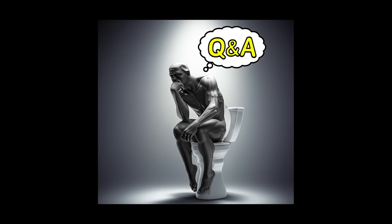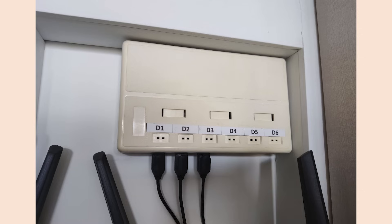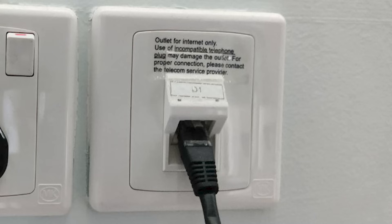The first question — surprisingly I didn't expect a lot of you to ask this, so I just skimmed through it in my previous video. The question is: how do I know which LAN port goes to which room in my HDB? In my previous video I referred to that as D1, D2, D3 in the DB box to simplify terms for lay people. That thing in the DB box — I'll put a picture here — is also known as a patch panel. It has D1, D2, D3 labels.